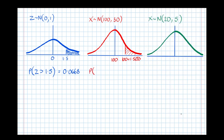So the probability that X is greater than 100 plus 1.5 root 30 — i.e., 1.5 standard deviations from the mean — is also 0.0668.